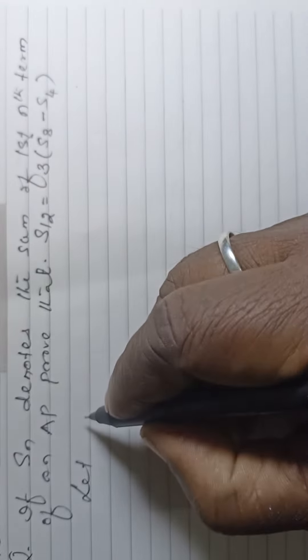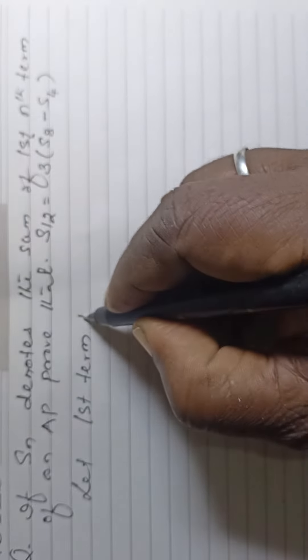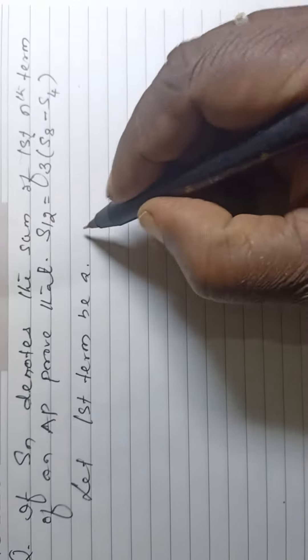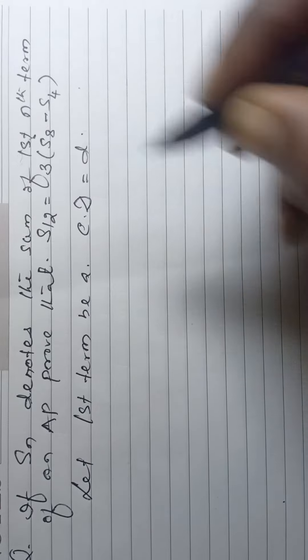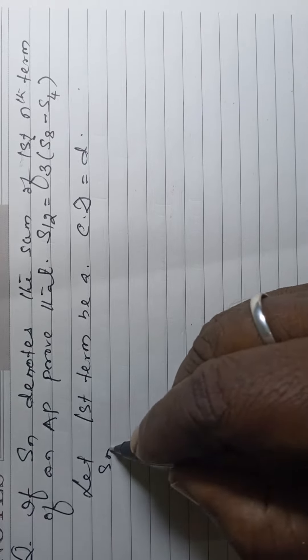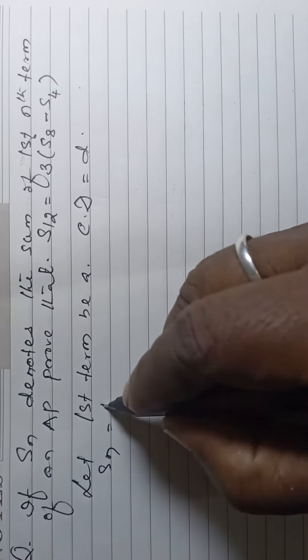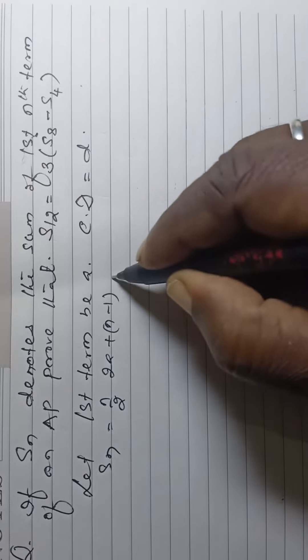Let first term be A, common difference be D. Then by formula Sn is equal to n by 2, 2A plus n minus 1 into D.